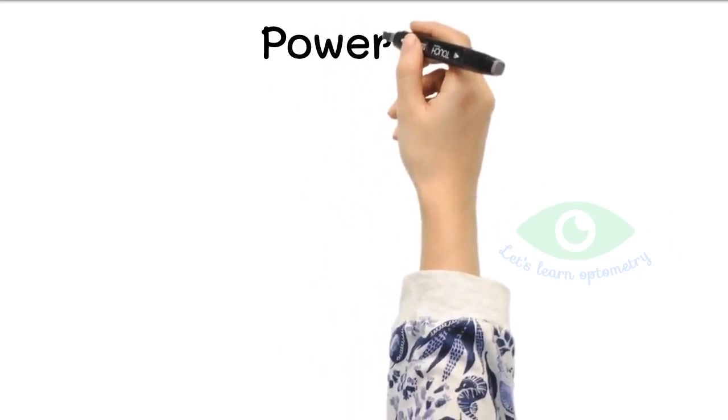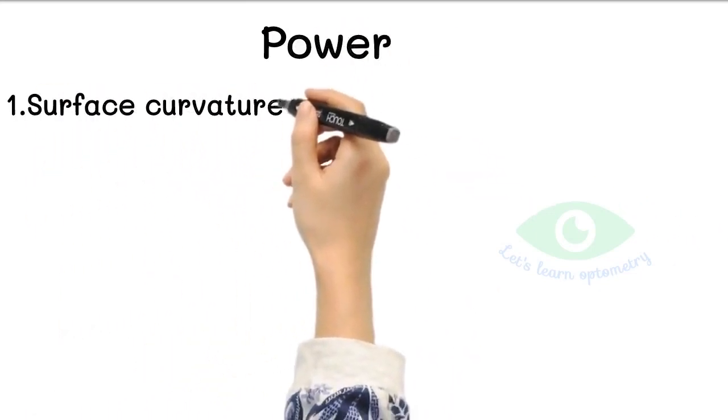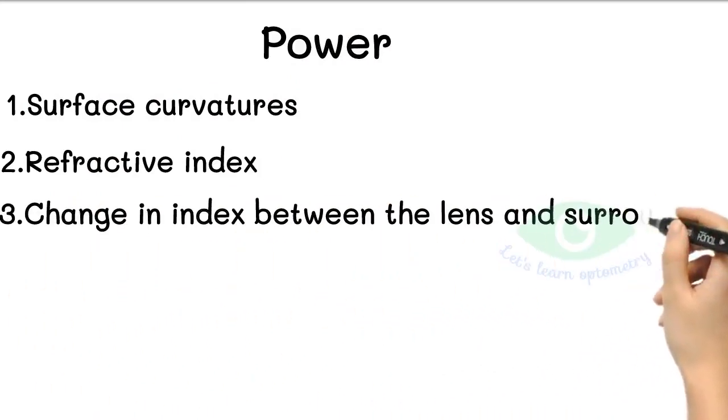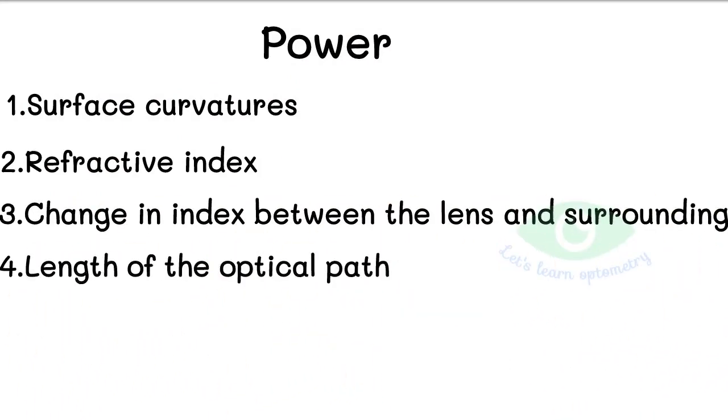The power of the lens depends on the surface curvatures, refractive index, change in index between the lens and the surrounding environment, and the length of the optical path.